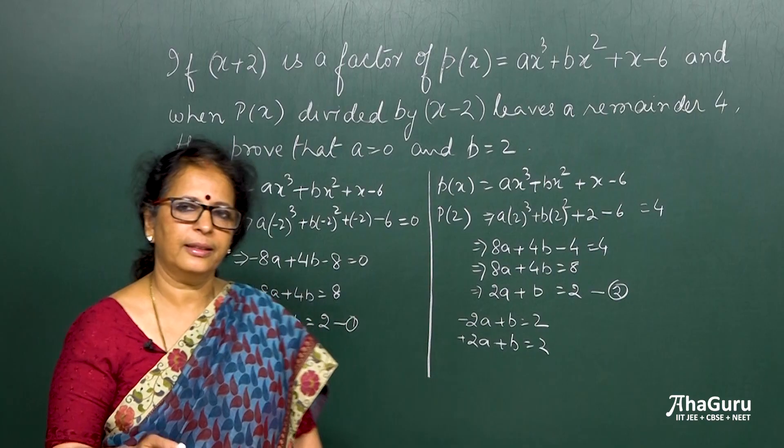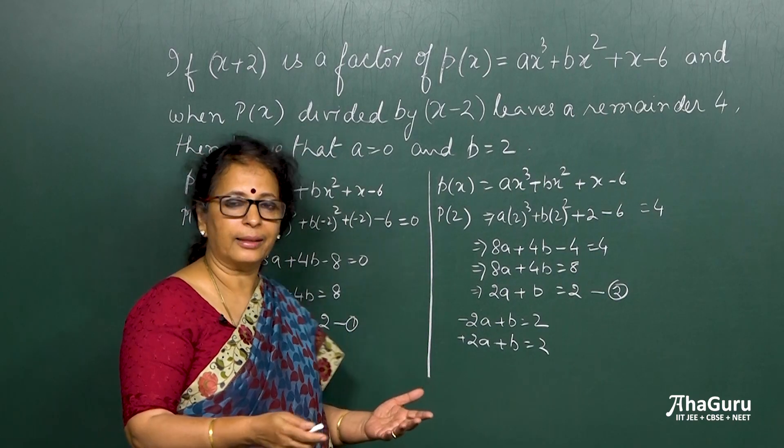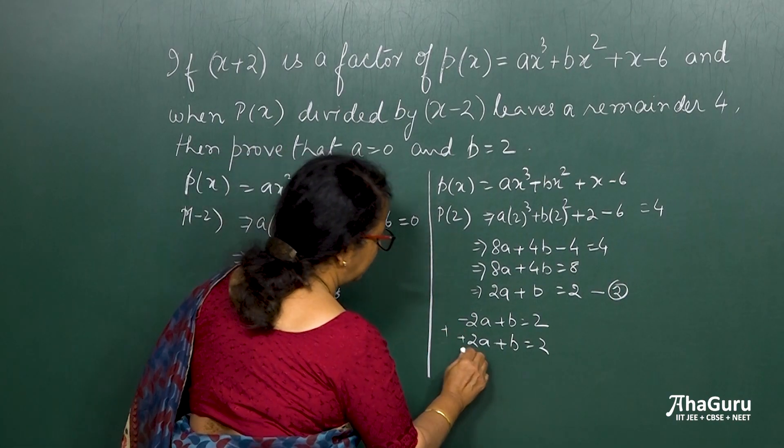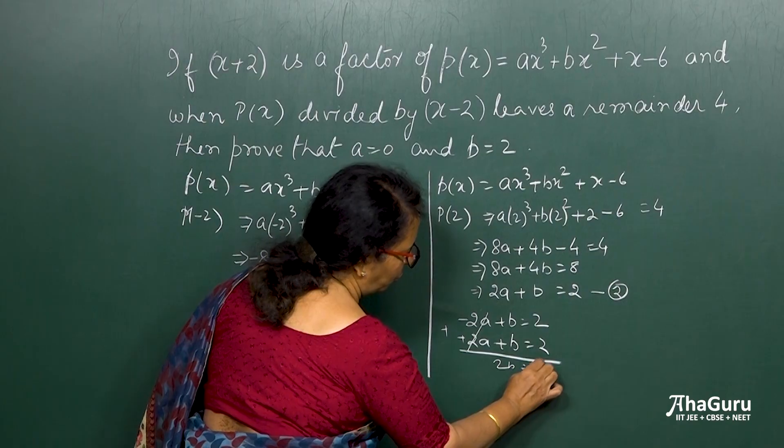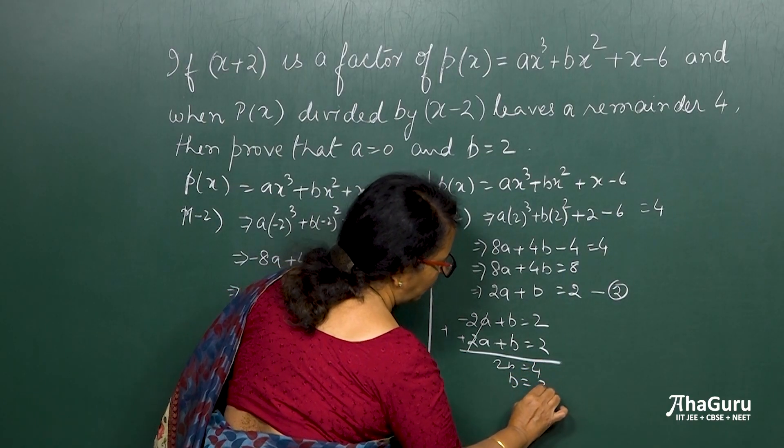Same coefficient with opposite sign. So if I want to eliminate, I just have to add them. So if I add them, what do I get? These two will get cancelled. So I get 2b is equal to 4, will give me b is equal to 2.